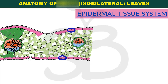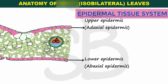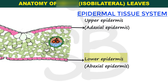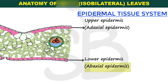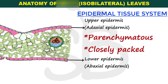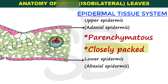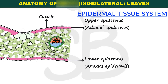The epidermis forms the leaf on the upper surface and lower surface. The upper side is the adaxial epidermis and the lower side is the abaxial epidermis. These are parenchyma cells. The epidermis covers the outer wall with a wax coating — this is the cuticle.